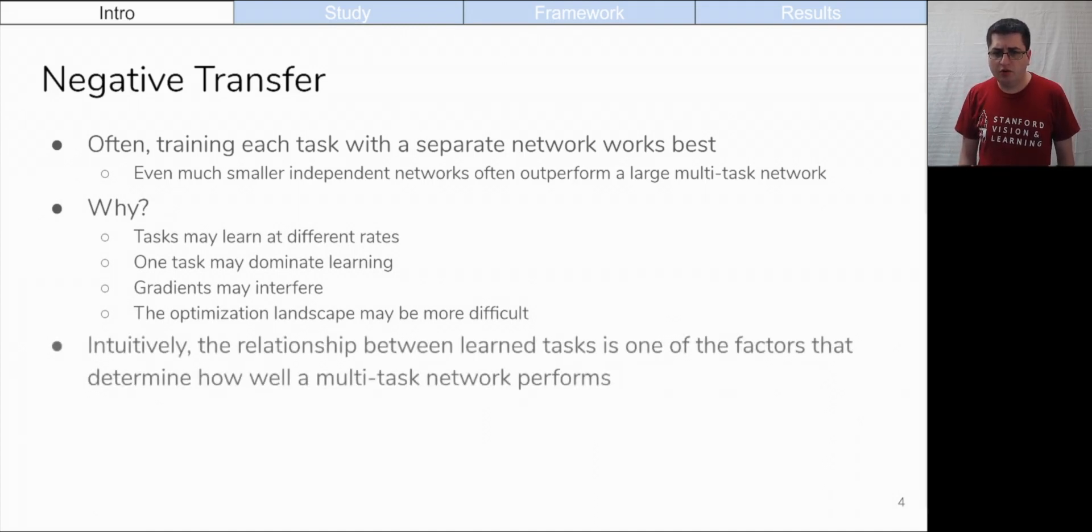Also, gradients from each task sometimes interfere. Furthermore, the optimization landscape of multiple summed losses can be more difficult to optimize. And intuitively, the relationship between learned tasks is one of the factors that determines how well multitask learning performs.